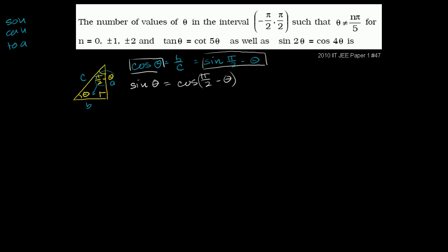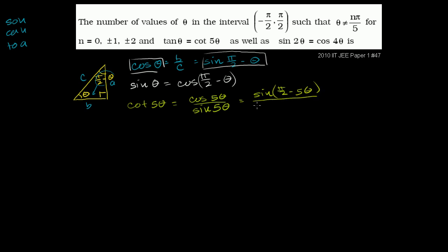We can use this identity when we solve the first equation. The cotangent of 5 theta is the same thing as cosine of 5 theta over sine of 5 theta — it's just 1 over the tangent. We can convert the cosine into sine using our identity: this becomes sine of pi over 2 minus 5 theta over cosine of pi over 2 minus 5 theta, which is exactly the tangent of pi over 2 minus 5 theta.